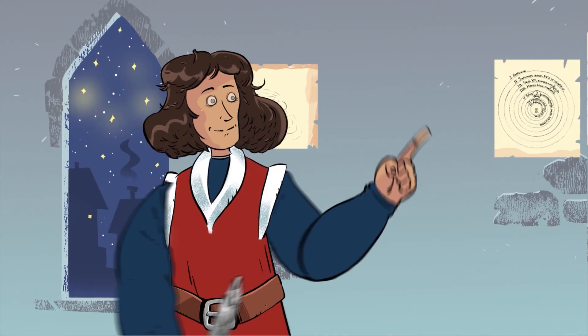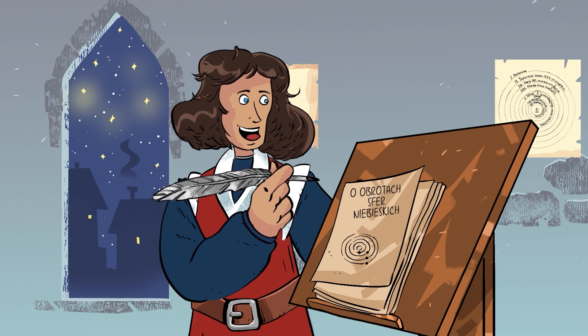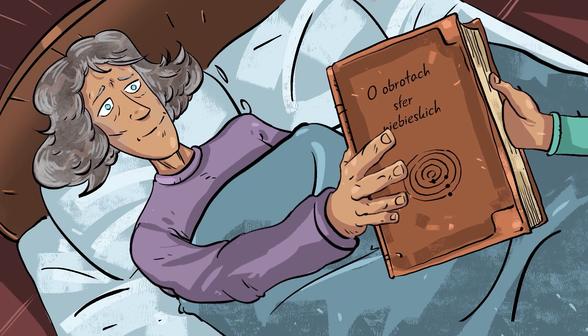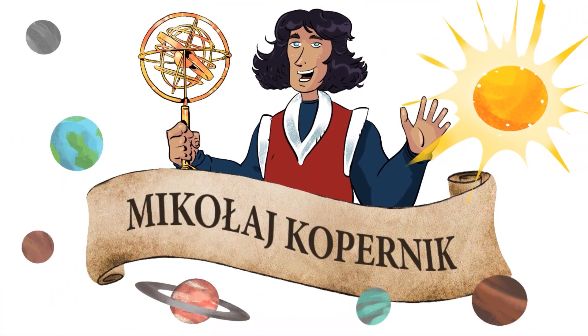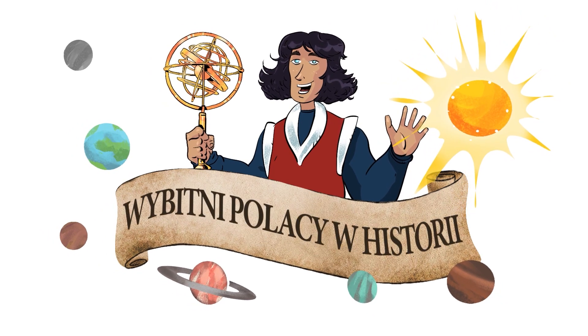Nicolaus Copernicus wrote On the Revolutions of the Heavenly Spheres around the year 1530. The legend says that Copernicus received the first copy on his deathbed. To this day, Nicolaus Copernicus is considered one of the greatest scientists and discoverers in history.